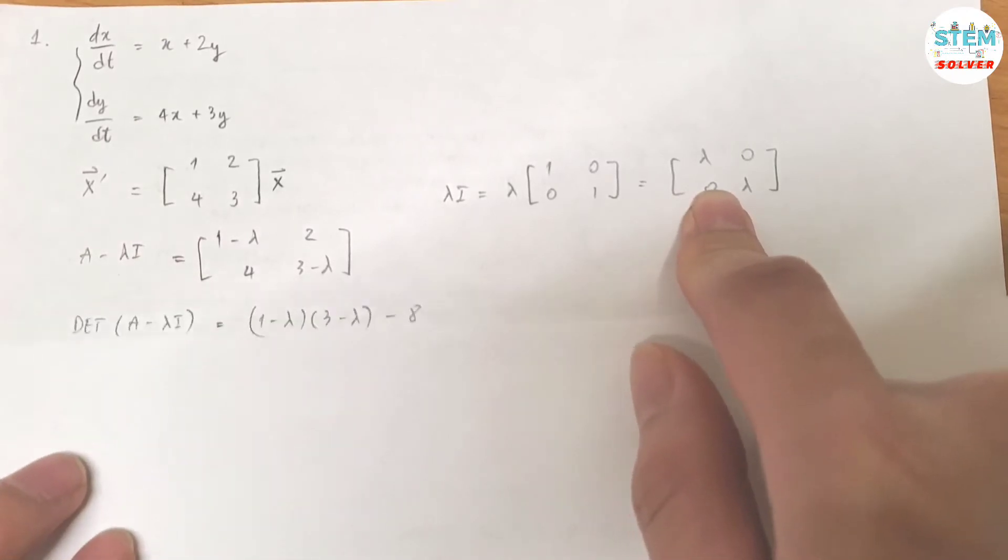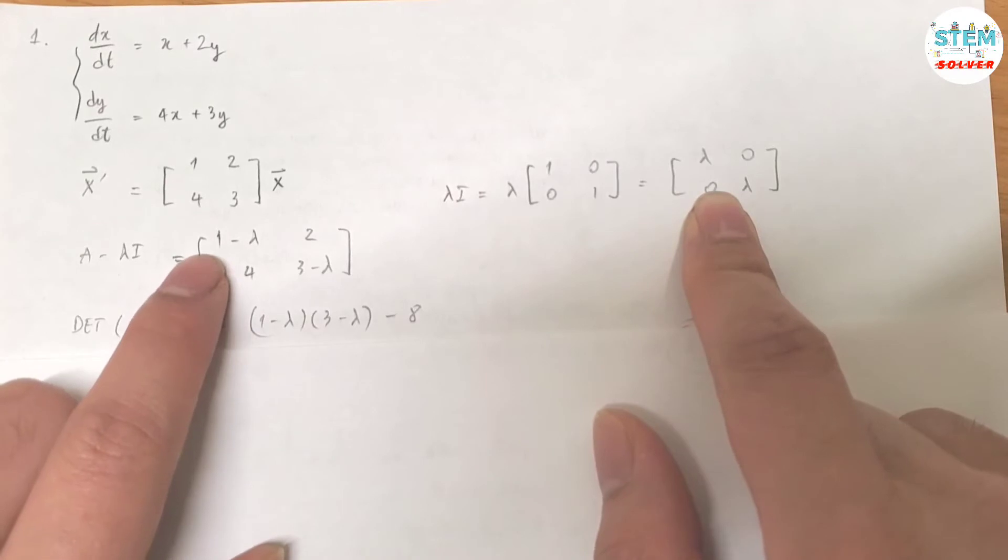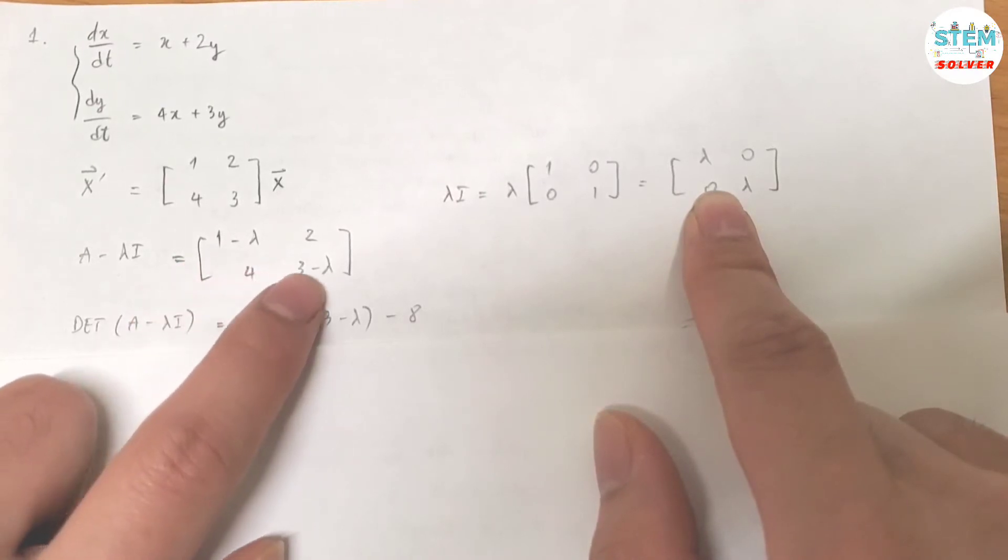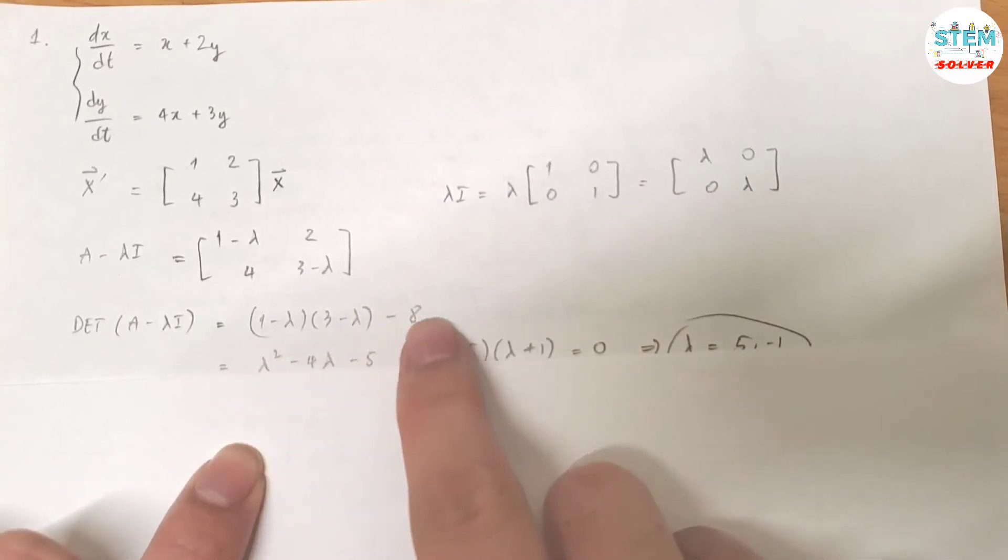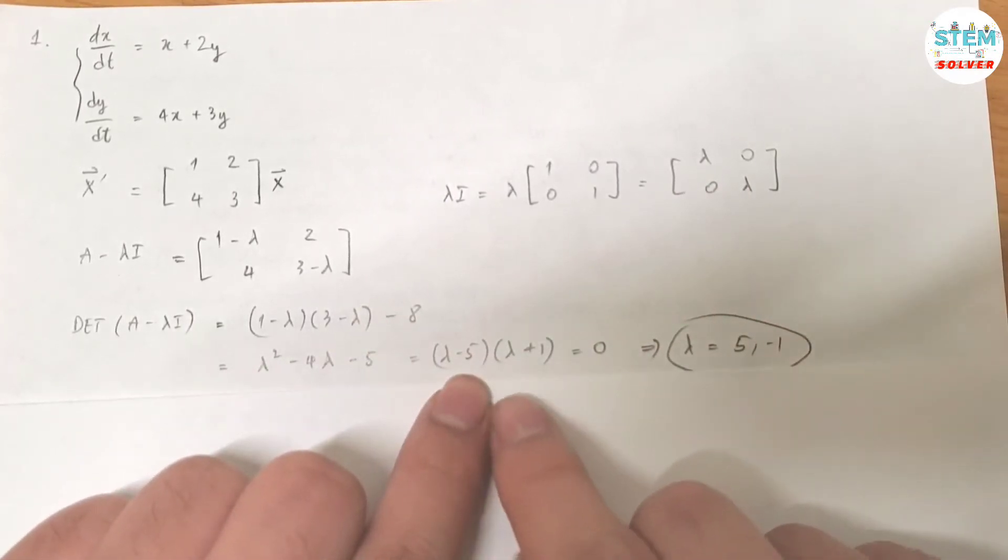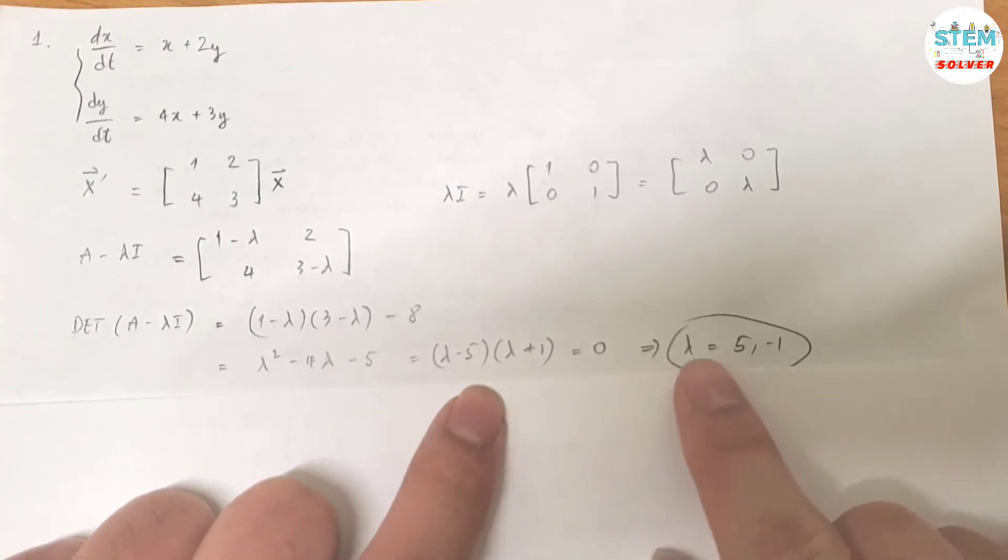So you have this one, right? And then you're going to find the determinant of A minus lambda I, which is (1 minus lambda) times (3 minus lambda) minus 2 times 4, which is 8. After you distribute this out and simplify it down to factor form, you get (lambda - 5)(lambda + 1). And then set it equal to 0.